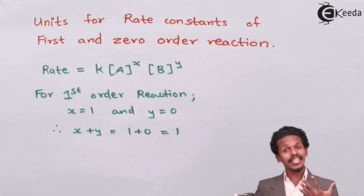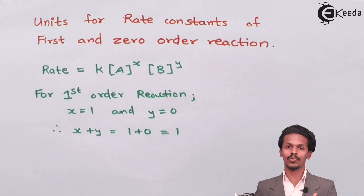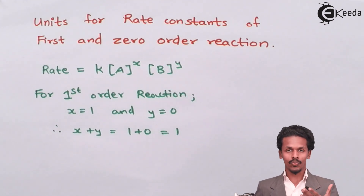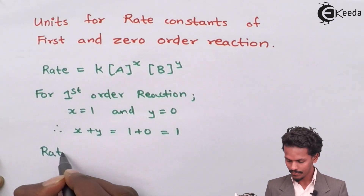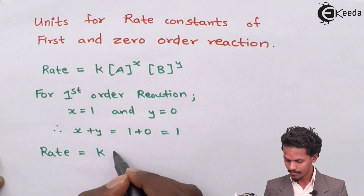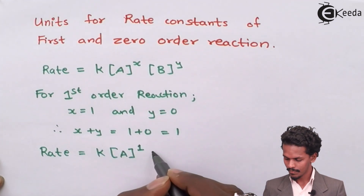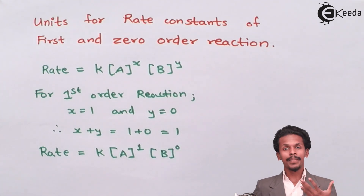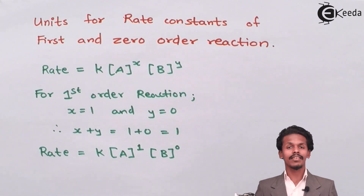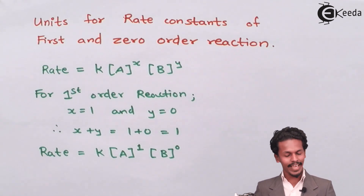When I substitute this value into the rate law — rate equals k times A raised to x times B raised to y — the equation becomes rate equals k times A raised to 1 times B raised to 0. Since anything raised to 0 equals 1, the equation simplifies.